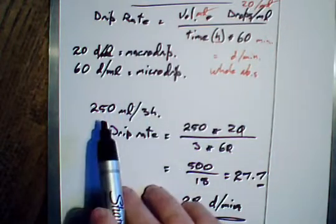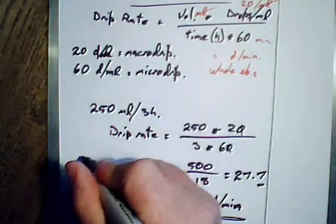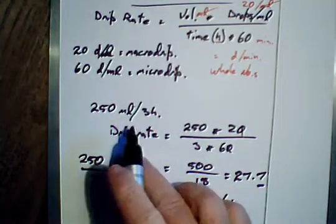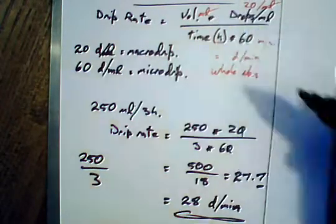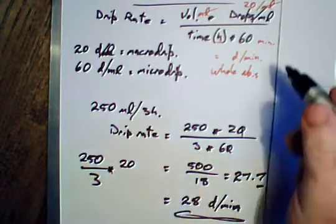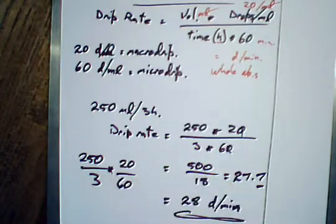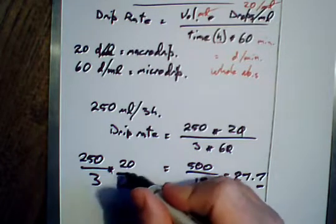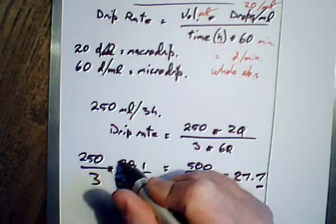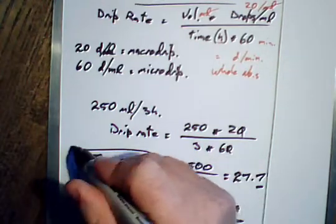So essentially there's that 250 over three hours. It's already got half the formula done. You would then just say okay, we know it's 20 drops per minute over an hour. If you wanted to be pretty quick and easy with that, you just say that's one over three because 20 goes into 60 three times, so that is exactly the same formula.